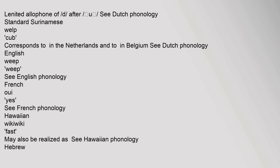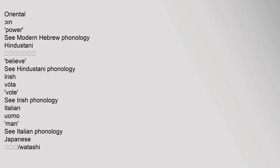Dutch: limited allophone of D after U (see Dutch Phonology). Standard Surinamese — 'welp,' corresponds to W in the Netherlands and to V in Belgium (see Dutch Phonology). English — 'weep' (see English Phonology). French — 'oui' (see French Phonology). Hawaiian — 'wiki,' which may also be realized differently (see Hawaiian Phonology).